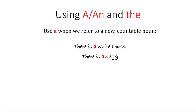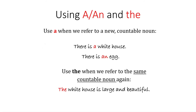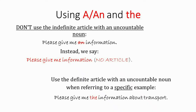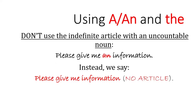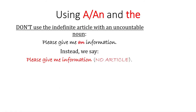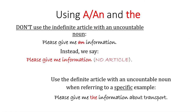We use 'A' and 'AN' to refer to a noun that we may not know. For example: 'There is A white house' — there are many white houses and this is just one. Then we use THE when we refer to it again: 'The white house is large.' We do not use the indefinite article with an uncountable noun — don't say 'please give me AN information'; say 'please give me information.' We use the definite article with an uncountable noun when it is specific: 'Please give me THE information about transport.'